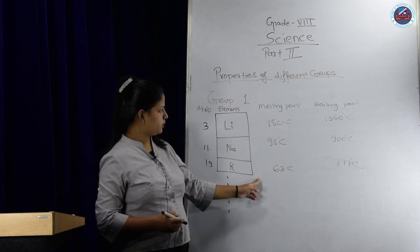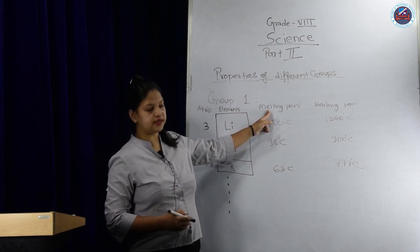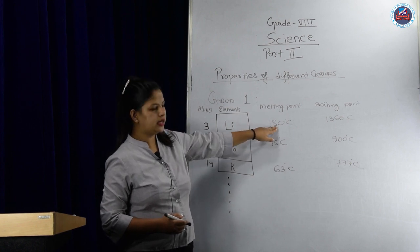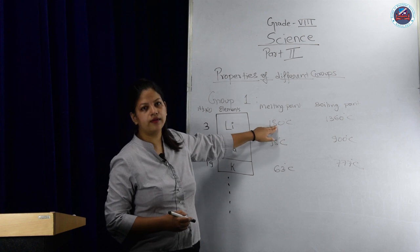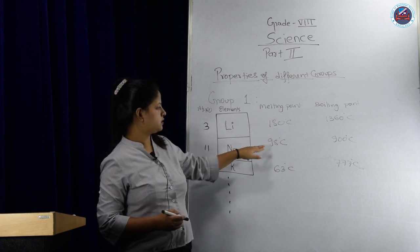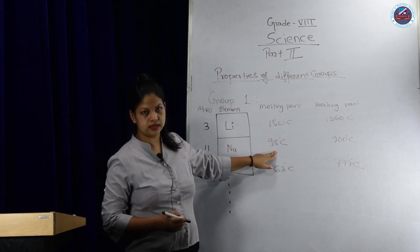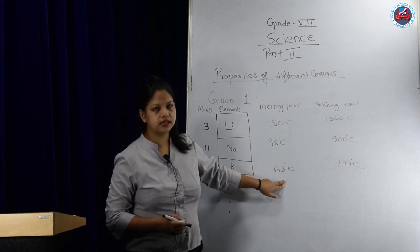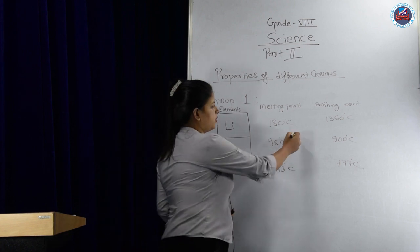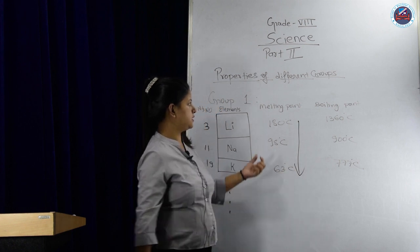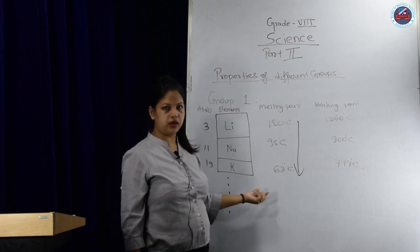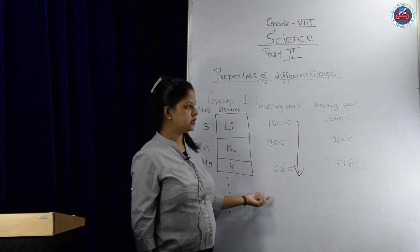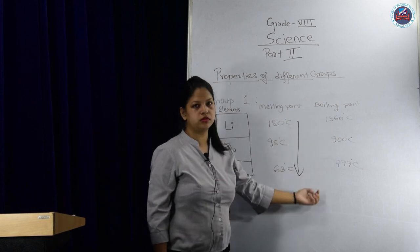When we check their properties down the group, melting point is decreasing. Lithium's melting point is 180°C, sodium is 98°C, and potassium is 63°C. So in group 1, when the element goes down, its melting point decreases. Similarly, the boiling point also decreases.